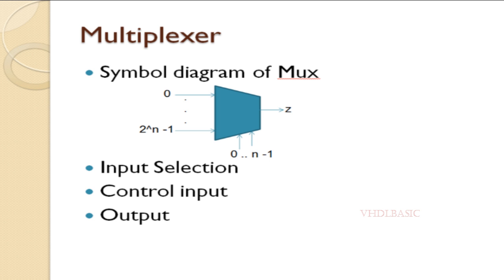First of all, we need to know what a multiplexer is. A multiplexer, also called a MUX, is a digital electronic device or integrated circuit used to select one of several input signals and route it to a single output. It is a fundamental building block in digital electronics and plays a crucial role in data routing and switching applications. Also, a multiplexer is a universal gate.